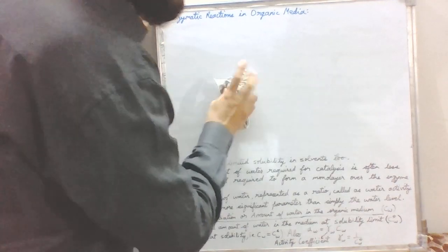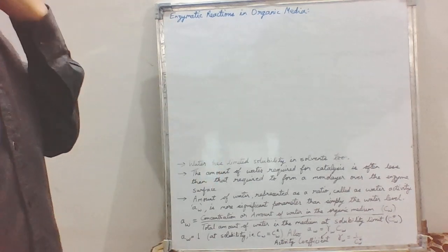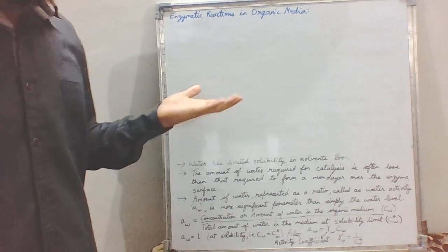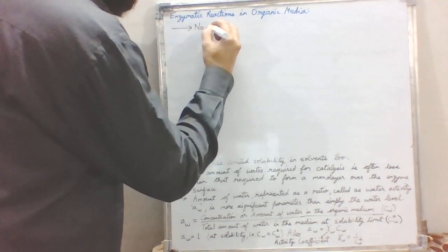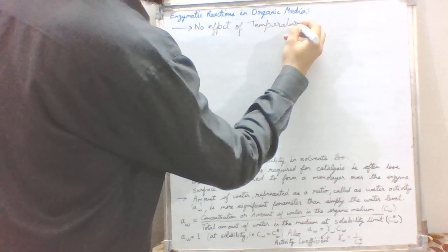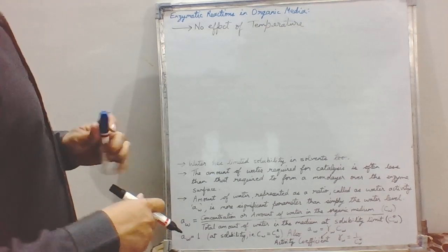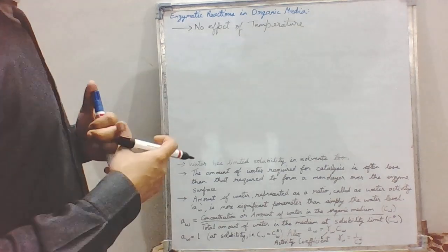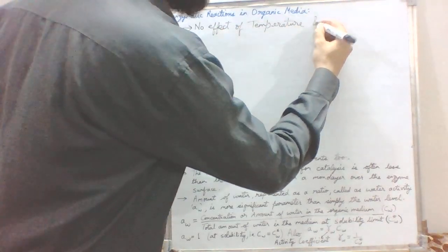There is no effect of temperature in organic medium because there are no free water molecules and enzymes are rigid — not flexible. Similarly, there is no concept of hydrogen ions in organic medium, and if organic acids are used, they are very weak acids. Since the enzyme is rigid, pH will also have no effect. So there is no effect of temperature or pH of the medium.